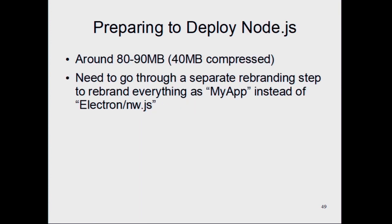If you deploy using Electron or NW.js, a deployment comes out to around 80-90 megabytes, but compresses to around 40. You also need to rebrand it because the binary will be called 'Electron' and the task manager will say 'Electron', so there's a rebranding step to change it to your app's name. There are weird GitHub tools that will do this packaging for you, but they don't explain what they're doing — they just output an installer and say 'that's it'. It's annoying that way, but that's what's involved.